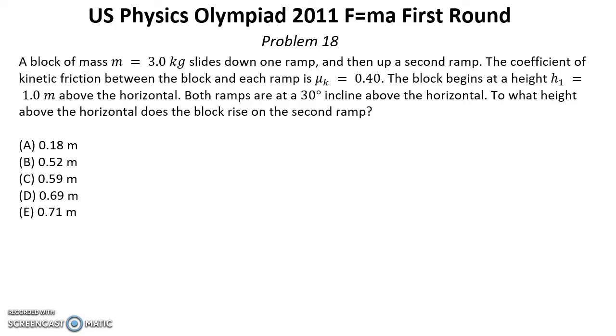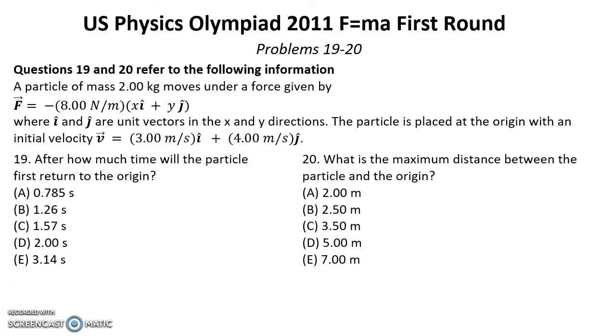Problem eighteen. Solution for this problem you can find below this video on the reference in the description. A block of mass M equal 3 kg slides down one ramp and then up a second ramp. The coefficient of kinetic friction between the block and each ramp is mu k equal 0.4. The block begins at a height h1 equal 1 meter above the horizontal. Both ramps are at a 30 degrees incline above the horizontal. To what height above the horizontal does the block rise on the second ramp?